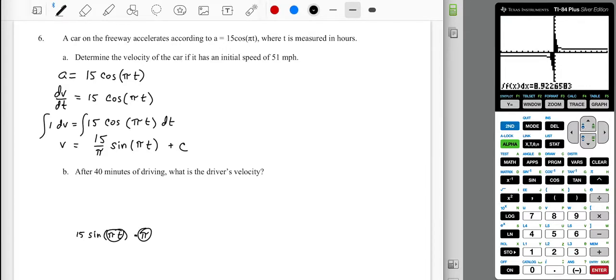Alright, now when you do the double check, you've got 15 over pi, sine of pi t, multiplied by the derivative on the inside, which is pi, then the pi's cancel out, and you get what you need. Although, this should be a cosine. So it took a while, I made a couple of false starts there, but I got you there.